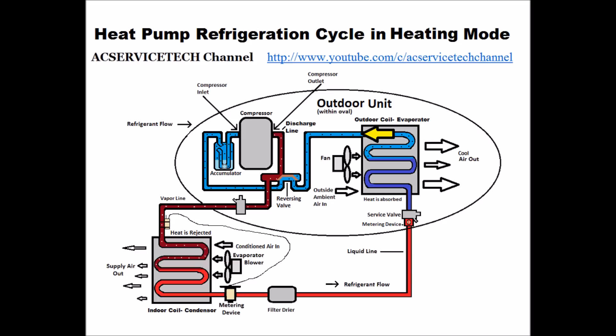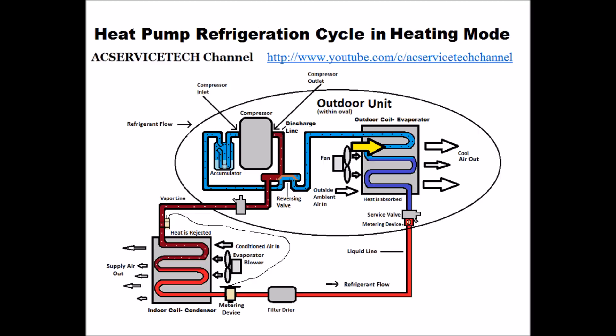It then continues as a superheated, low pressure, low temperature vapor refrigerant through to the reversing valve. It comes out through the pure suction, which is the middle line, and then goes into the accumulator. The accumulator's job is to store any excess liquid refrigerant and make sure that if there is no superheat coming from the outdoor coil — maybe it's extremely cold, or the coils are frosted, or defrost has not started yet — it's not able to absorb enough heat from the outside air.